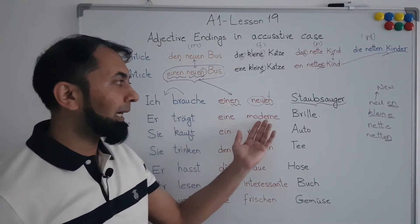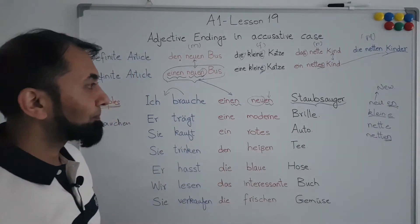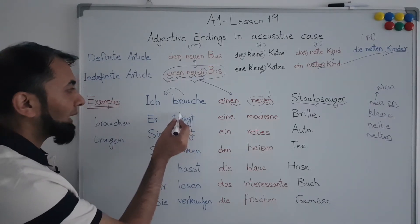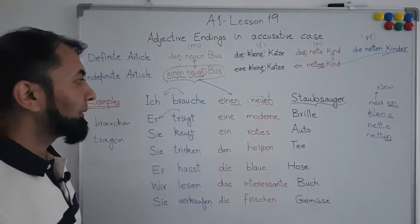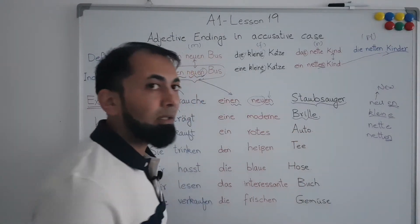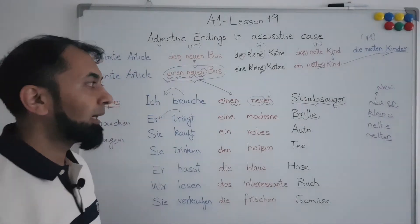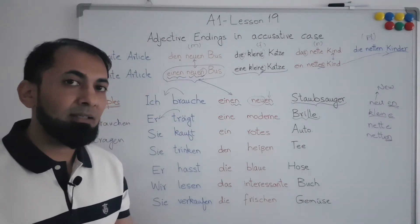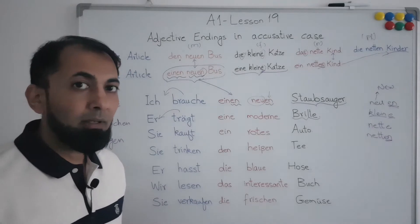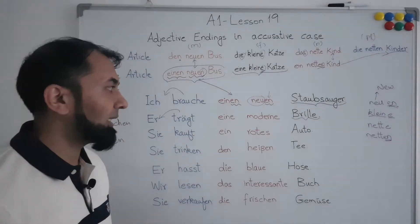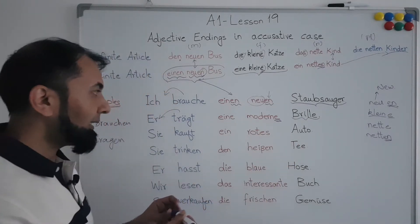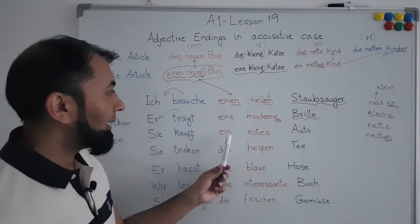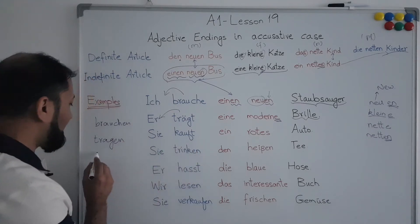The next example is 'Er trägt eine moderne Brille' — he wears modern glasses. The verb 'tragen' means 'to wear' or 'to carry'; conjugated with 'er' it becomes 'trägt'. The noun 'Brille', meaning 'glasses', is a feminine noun. Therefore we refer to the feminine section of the table, which says we add '-e' at the end of the adjective in the accusative case. So 'modern' becomes 'moderne'.